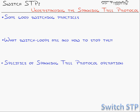We'll look at what switch loops are, because that's one of the crises you run into when setting up a large switch network. Then we'll see how to stop the switch loops — the answer is Spanning Tree Protocol. After we talk about what Spanning Tree does, we'll get into the specifics of Spanning Tree operation. Spanning Tree is one of those protocols that has a very simple goal, but there's a lot of complexity in how it accomplishes that goal.